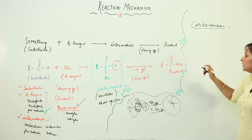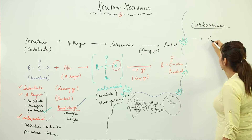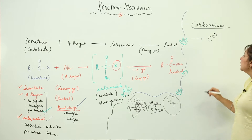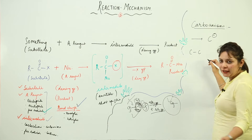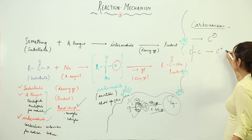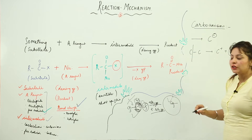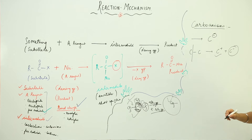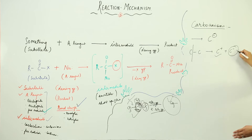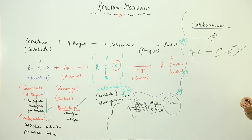So now we have the carbanions. They are carbon with the negative charge. As I told you, they are also formed as a result of heterolytic fission. That means the fission occurs in such a way that one atom takes away the electrons and the other is deprived. We have already studied the one which is deprived — that is the carbocation. Coming on to the carbanion, it is the carbon which has the negative charge, meaning it has taken away the shared pair along with it.